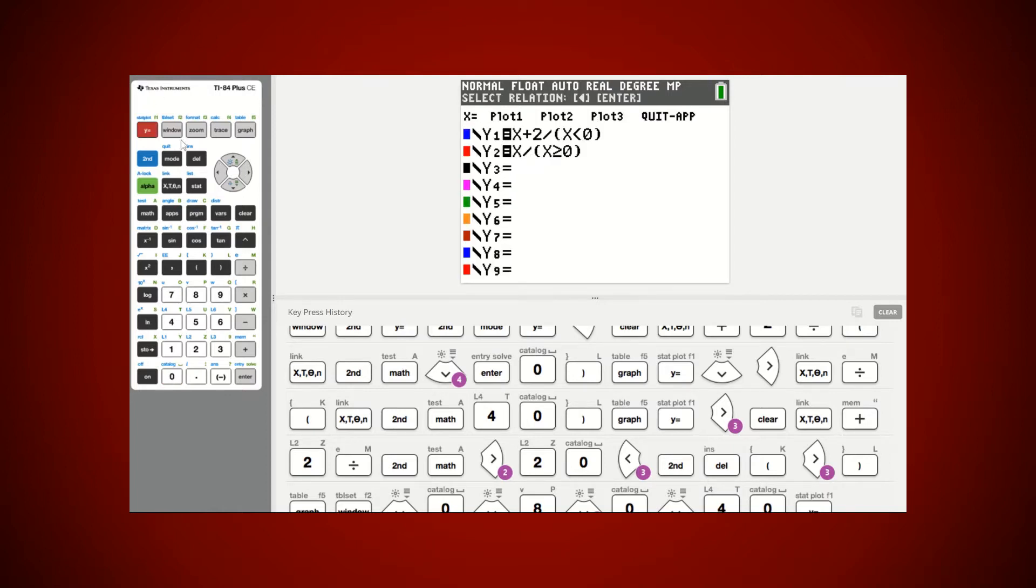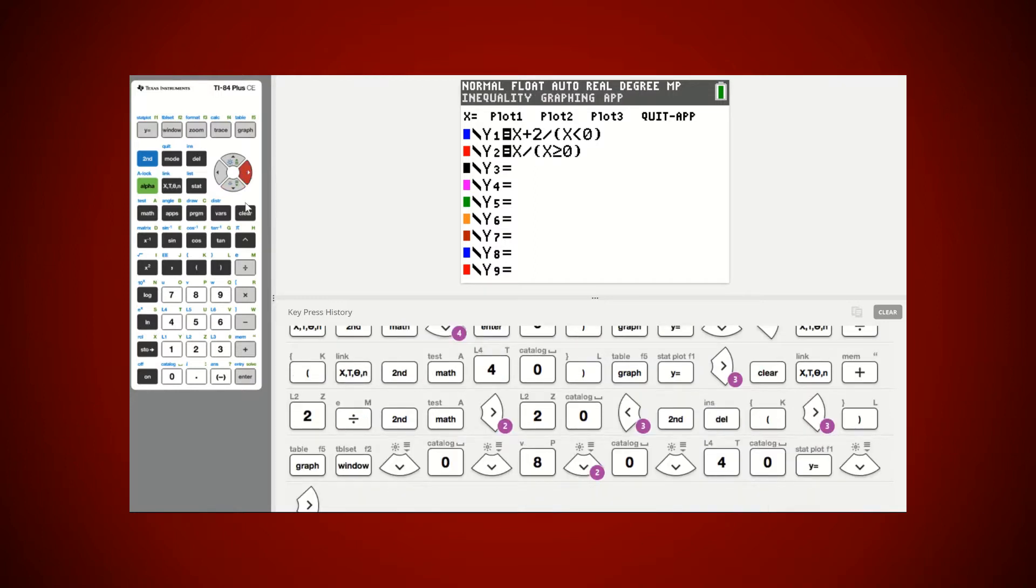All right. So let's go in here to y equals. I've got to clear out what I had in here before. All right. So we said that our equation was five times the greatest integer of x. So I've got five.